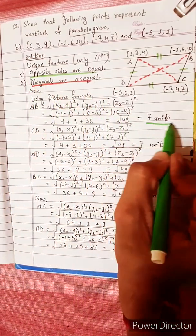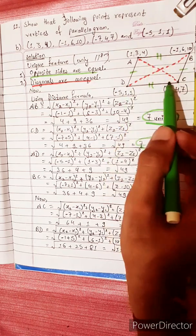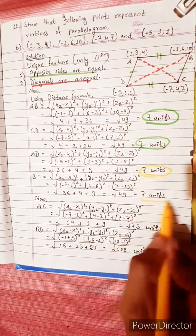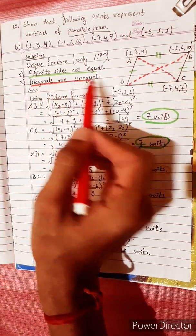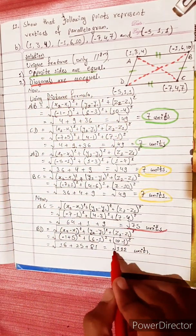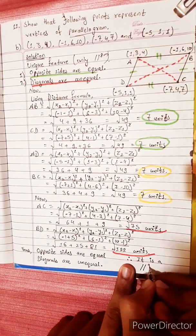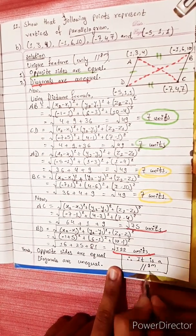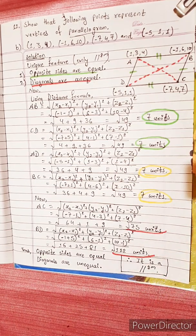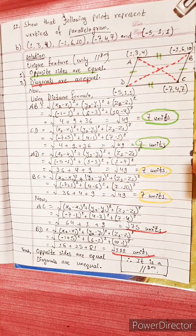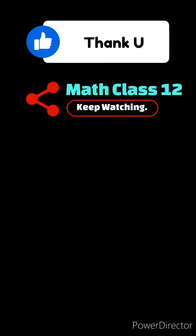Opposite sides AB = CD = 7 units, and BC = AD = 7 units. The diagonals are unequal: one is 7 units and the other is √122 units. Therefore, it is a parallelogram. Very easy. Bye bye, and thank you.